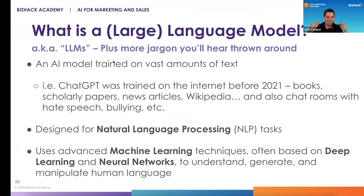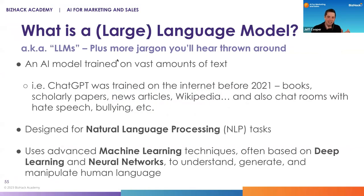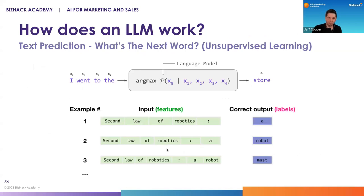ChatGPT is a large language model. A large language model is a machine designed to process, understand, and generate a lot of language. You'll hear jargon like LLMs, language models, NLP, or natural language processing — fundamentally, all we're talking about are machines designed to understand or generate content using written human language. The way these tools were built is we scraped the entire internet of data. Companies like OpenAI took every website and built what they call a deep learning machine — a neural network that takes inputs and tries to predict the next word.